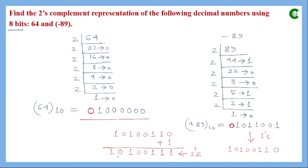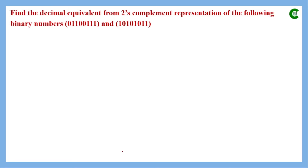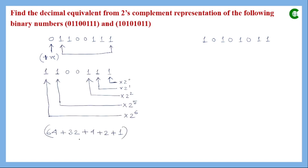Two numbers are given in 2's complement form and we must find their decimal equivalents. For the first number, the MSB is 0, meaning it is positive. Since it is positive, 2's complement equals sign-magnitude, so we convert the remaining 7 bits directly to decimal: 64 plus 32 plus 4 plus 2 plus 1 gives 103. The decimal equivalent is plus 103.